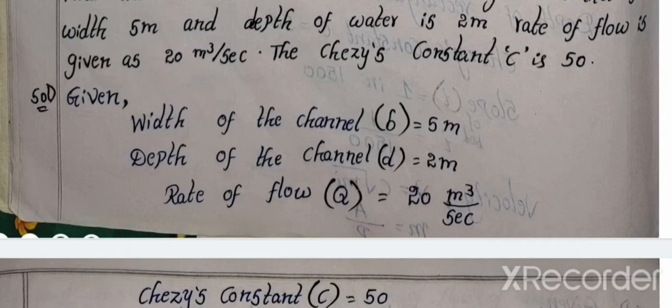Open channel discharge to open channel using. Find the slope of the bed of the rectangular channel of width 5 meters and depth of water is 2 meters.